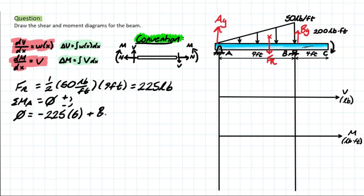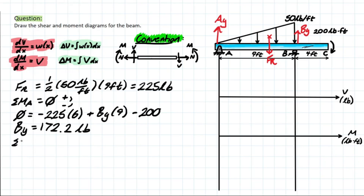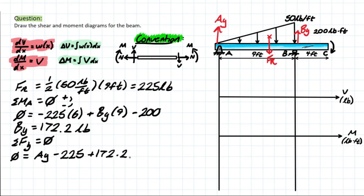The BY reaction is nine feet away, and the external moment — creating a clockwise motion — is 200 pound-feet. Solving for BY, we get 172.2 pounds. Then we take the summation of forces in Y: AY minus the resultant force plus 172.2 pounds equals zero, giving AY equal to 52.8 pounds.